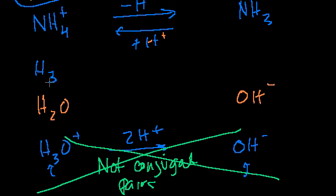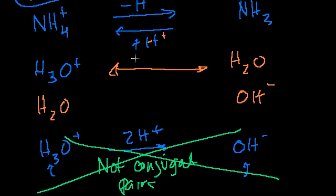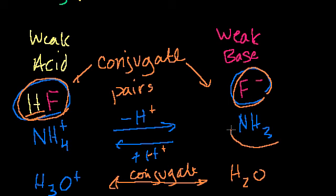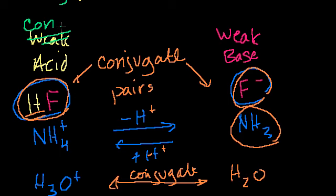Within every conjugate pair you have an acid and a base. If you ask what is the conjugate base for hydrofluoric acid, you get rid of a hydrogen and it's just the fluorine anion. If you have ammonia as a base, its conjugate acid is ammonium — you add a hydrogen proton. So the conjugate acid is that molecule plus a hydrogen; the conjugate base is that molecule minus a hydrogen.